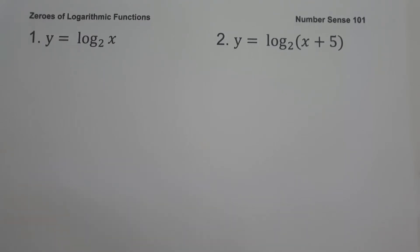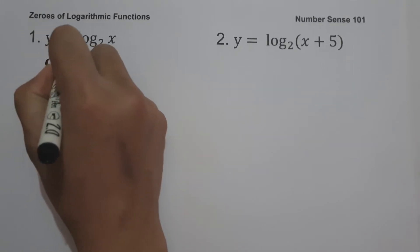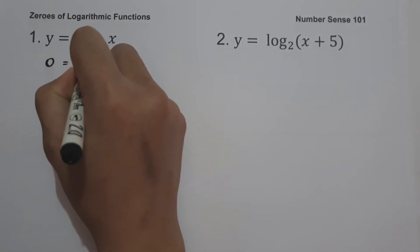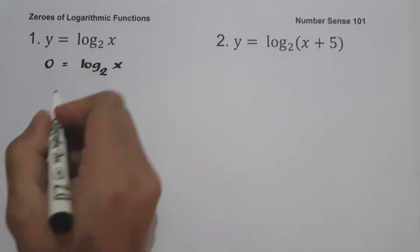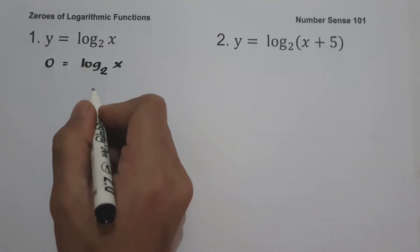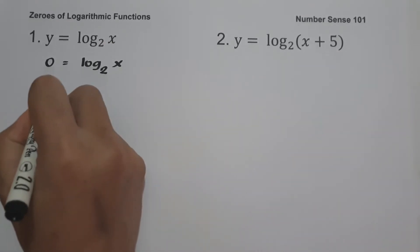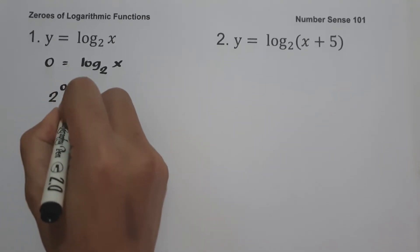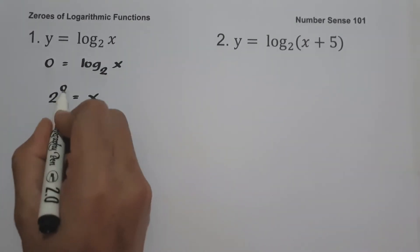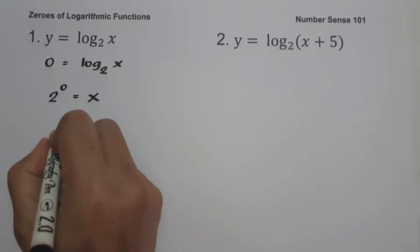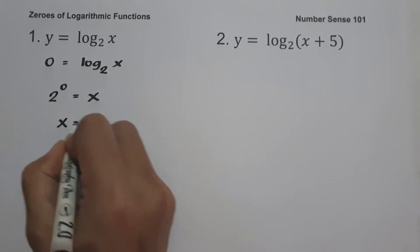So we have zero equals log base 2 of x. Let us convert this into exponential form: 2 raised to 0 equals x. Since 2 raised to 0 is 1, therefore the zero of the given function is equal to 1.